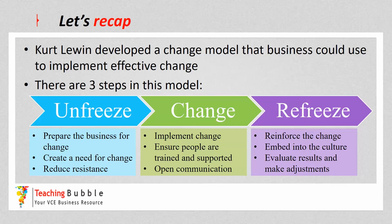To recap: Kurt Lewin developed a change model that businesses could use to implement effective change, and the three-step model is unfreeze, change, and refreeze. Unfreeze means preparing the business for change, creating the need or urgency, and reducing resistance. Change is actually implementing the change itself, ensuring that people are trained and supported with open, transparent communication so that everyone understands exactly what's expected of them. The final step, refreeze, is about reinforcing the change, embedding it into the culture, and making any adjustments where necessary. That is Kurt Lewin's model, which can be used to implement change effectively.